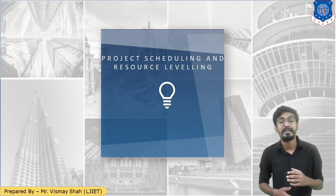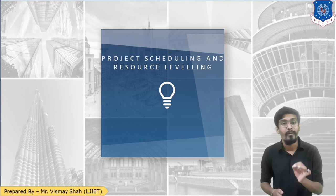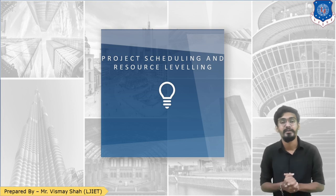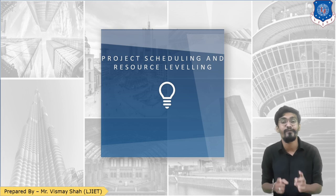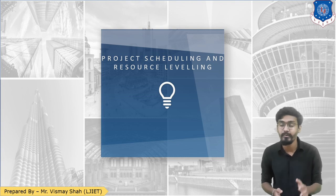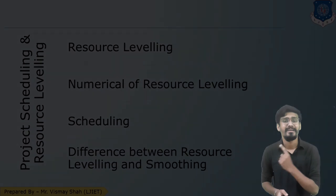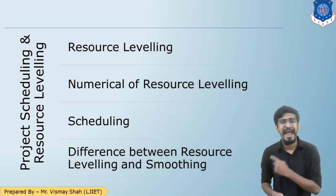Resource smoothing is done when there is a restriction on the project duration. When you have said that the project is to be completed in 30 days, then and only then you need to apply resource smoothing by fluctuating the float available with the non-critical activities. Today in this session we are going to learn resource leveling and scheduling.